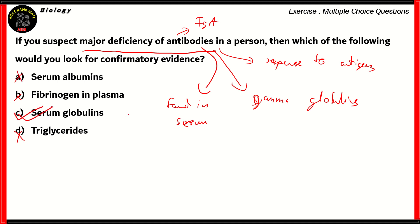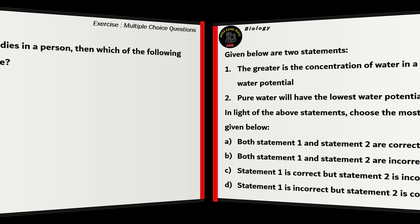So if you look for the number of serum globulins, you have a pretty good idea of the amount of antibodies in a person. So therefore, option C is the right option.